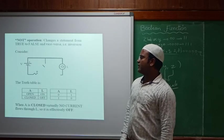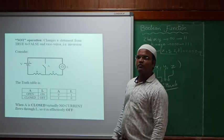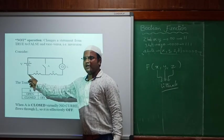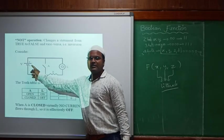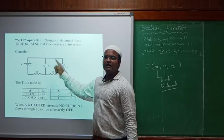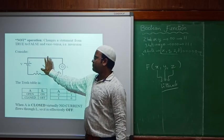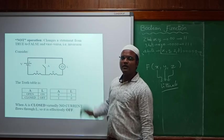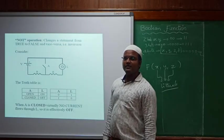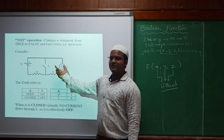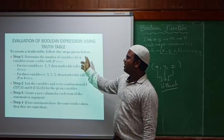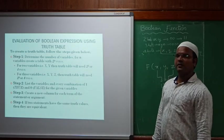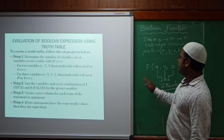The NOT operator: if I have x and want its complement, that is x-bar. If x is 0, output is 1; if x is 1, output is 0. For the NOT gate switch analogy: if I give zero input — coming from ground — the switch will be on; if I give one, the switch turns off. This is how the NOT gate works.